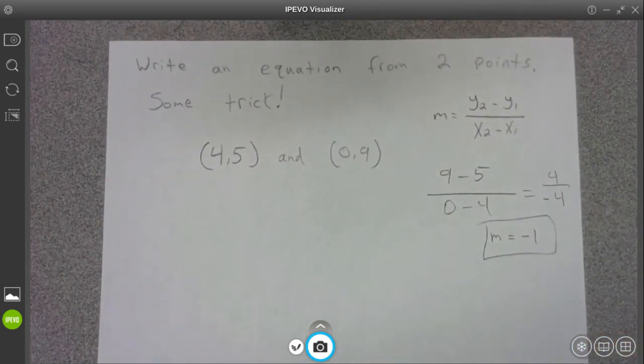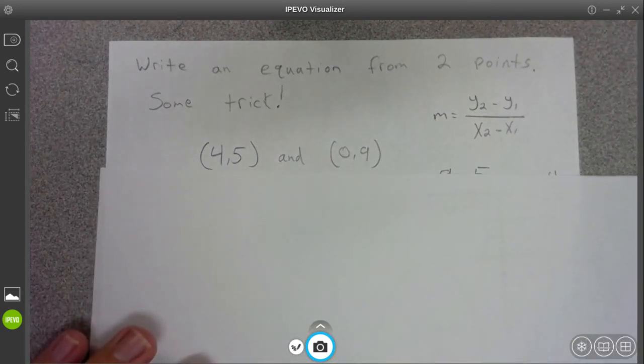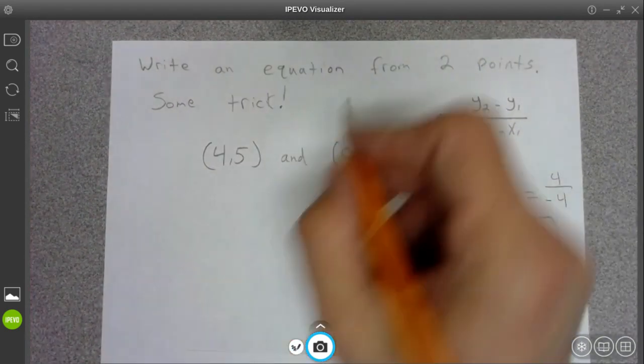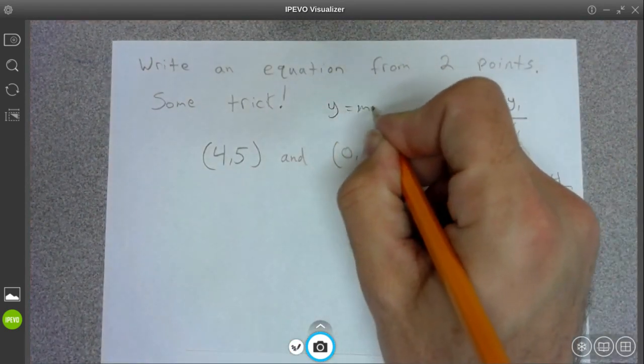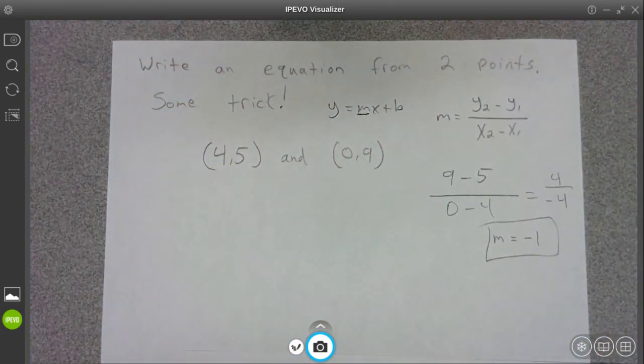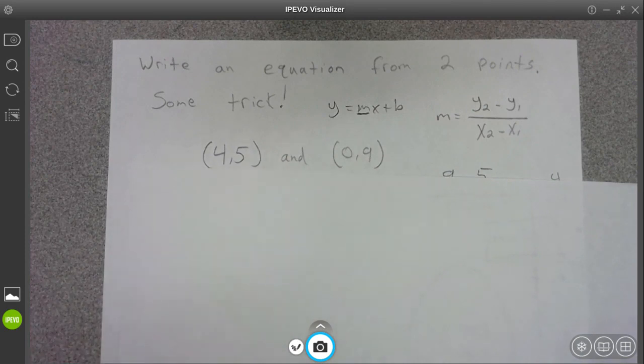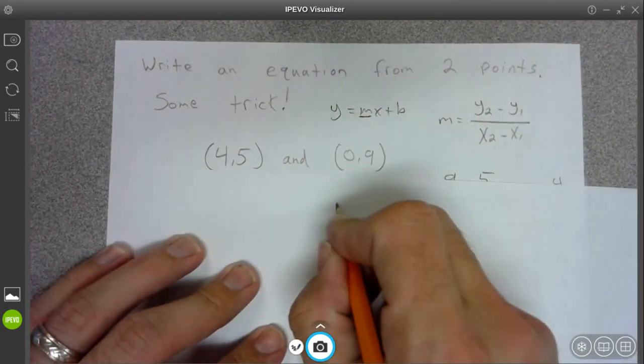Alright, now for this next one, you kind of just have to have a background in doing these. But next would be to find our b, y equals mx plus b, and we know our m. And the b is actually given to us, if you understand what the b is. So b is for the y-intercept.